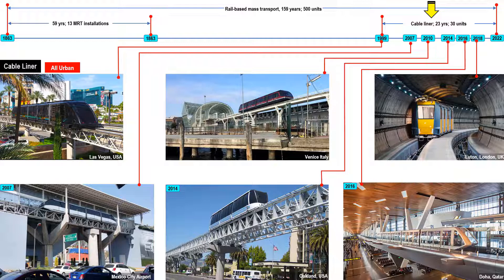Furthermore, the count does not include funiculars, which are the cable cousins of cable liners. Cable liner is a new type of mass transportation that only started in 1999. BRT, MRT, LRT, trams, and monorail had fewer installations in the first 23 years. As an example, MRT only had 13 installations in its first 59 years.